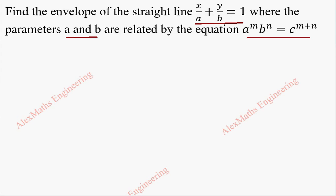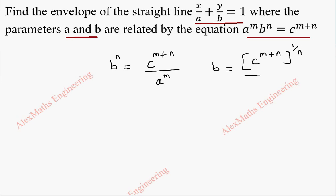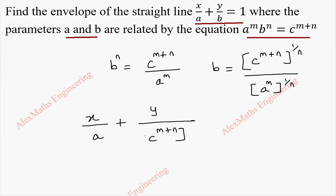From the given equation, we are going to take b^n, which is c^(m+n) divided by a^m. So from this, b will be c^((m+n)/m) divided by a^(m/m). This I have to substitute in the given straight line equation, which is x/a + y / [c^((m+n)) ^(1/m)] · a^(m/n) = 1. Let's keep this as our first equation.